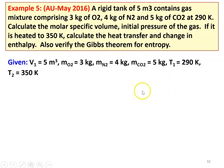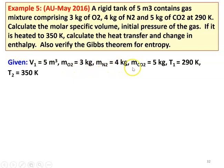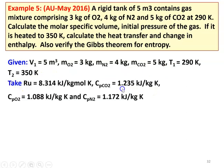The data given: volume V1 = 5 cubic meters; mass of O2 = 3 kg; mass of N2 = 4 kg; mass of CO2 = 5 kg; initial temperature T1 = 290 Kelvin; final temperature T2 = 350 Kelvin.